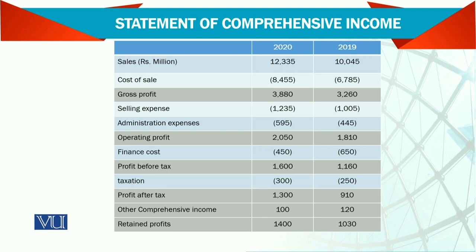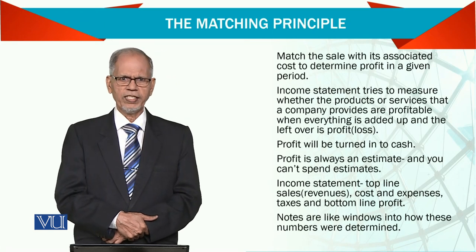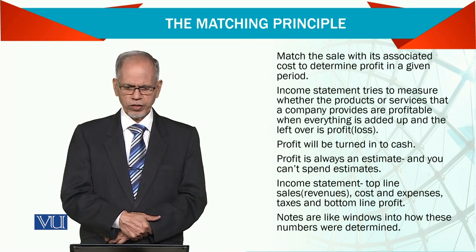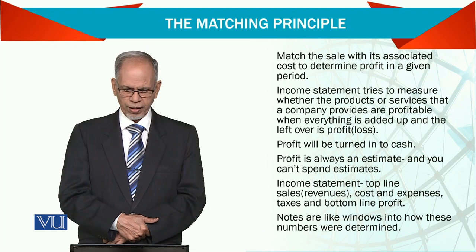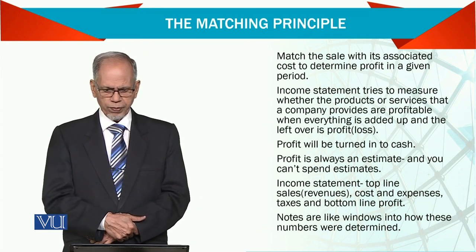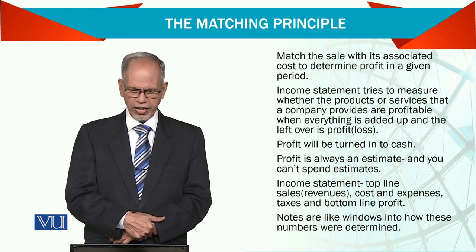After taxation, we have profit after tax, and then other comprehensive income — you can include it here or prepare a separate statement; ultimately it comes here from the total of that statement. So we get the retained profit for the year. I call it retained because it is not yet distributed. If you are going to distribute it, you report it somewhere else. In this income statement, we apply the matching principle: match the sales with the associated costs to determine profit in a given period. The income statement tries to measure whether the products and services a company produces are profitable; when everything is added up, the leftover is the profit.